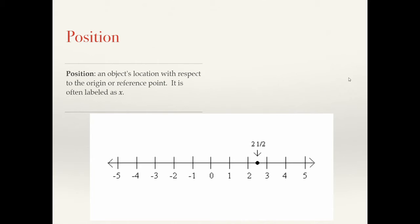So position is where this whole conversation is going to right now. Position is specifically an object's location with respect to the origin or the reference point. We often label positions with an X, like this script X here.